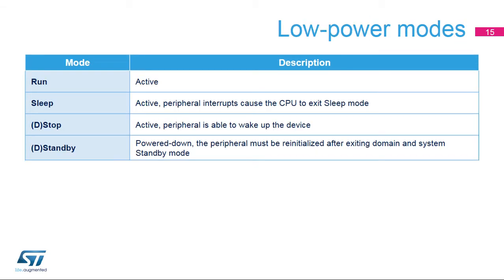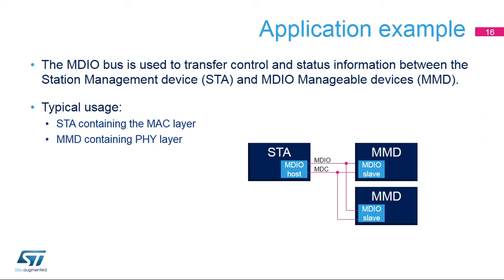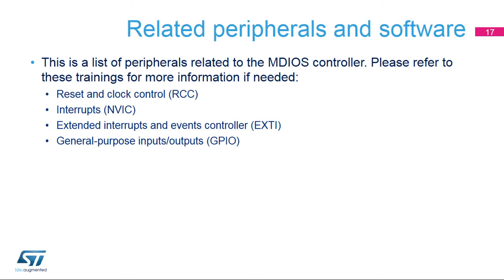Here is an overview of the peripheral status at specific low-power configuration modes. The device is not able to perform any communication in domain or system standby mode. It is important to ensure that all transmissions are completed before the MDIOS controller is disabled or the domain or system is switched down to standby mode. Here is an example of the MDIO interface used for communication between the station management device, or STA, and MDIO manageable devices, or MMDs. Typically, an MDIO bus is used between the Ethernet MAC and the physical layer, or PHY, in parallel with the PHY bus, and is used to detect cable disconnection, speed of the Ethernet link, usage of CSMA/CD or full duplex links, auto-crossover, etc. Here is a list of peripherals related to the MDIO interface. Users should be familiar with all the relationships between these peripherals to correctly configure and use the MDIOS controller.